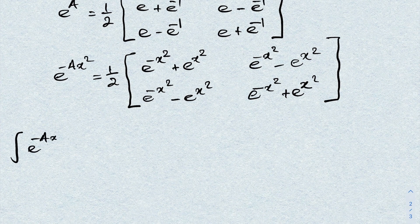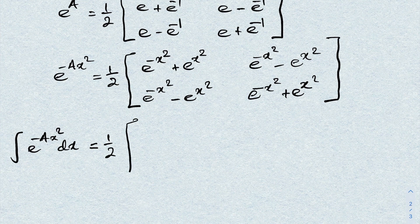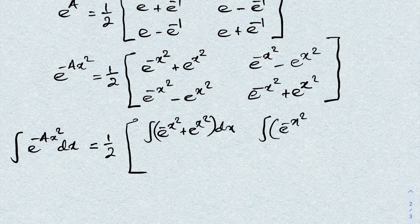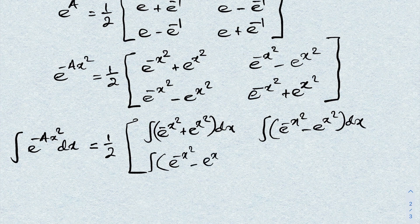Now we have to integrate e to the minus A x squared dx. Since A is our known matrix, this equals one half times the matrix with entries: integral of (e^(-x²) + e^(x²)) dx, integral of (e^(-x²) - e^(x²)) dx, integral of (e^(-x²) - e^(x²)) dx, and integral of (e^(-x²) + e^(x²)) dx.